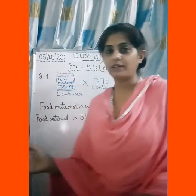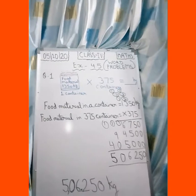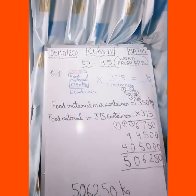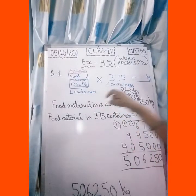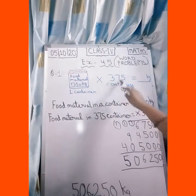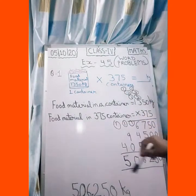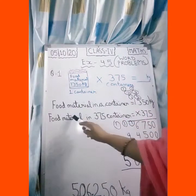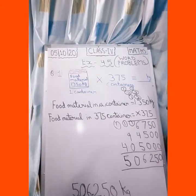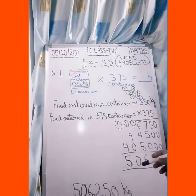How much food is in one container? We have 1,350 kg of food in one container. So, 1,350 kg food material is in one container. Now, for 375 containers, we will multiply 1,350 kg by 375. So when we write it: food material in one container is equal to 1,350 kg. Food material in 375 containers equals these two numbers multiplied. What do we do with two numbers? Multiply — because 1,350 is repeated 375 times.